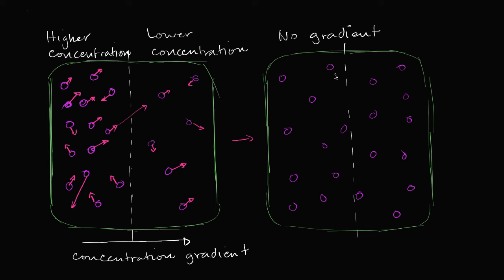Sure, in a given unit of time maybe some molecules move from the left to the right, but since you have equal concentrations on both sides, you're just as likely to have the same number move from right to left. And I only did this with 20 particles, which is an artificially low number. If we're actually talking about concentrations of air molecules, or as we'll see when we think about cellular membranes and different types of molecules in an aqueous solution, we're talking about way more than 20 molecules. In terms of probabilistic large numbers, the probability of something moving from the left to the right is the same as the right to left, and so you're going to have stability.